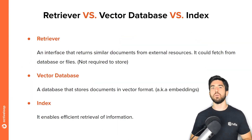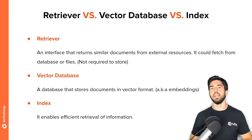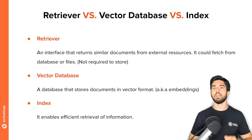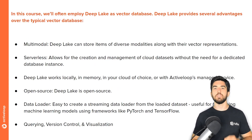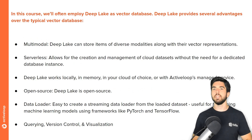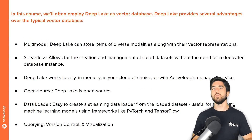In LangChain, retrievers play a crucial role in fetching relevant data from vector databases. A retriever fetches relevant information from a trustable knowledge base, acting like a search engine, and the LLM is then typically prompted to rearrange the information without inventing additional details. Within LangChain, an index is a powerful data structure that organizes and stores documents to enable efficient searching, with embeddings-based indexes being the most prevalent. In this course, we'll often employ DeepLake as our vector database. DeepLake can store items of diverse modalities — like text, images, audio, and video — along with their vector representations.